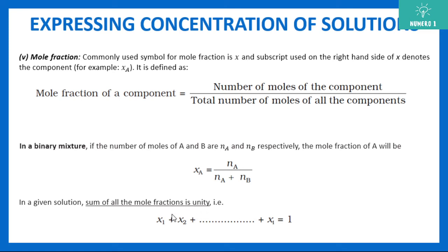For i components, x_1 + x_2 + x_3 + ... + x_i = 1. In the binary solution example, x_A = n_A / (n_A + n_B) and x_B = n_B / (n_A + n_B). Adding x_A + x_B will obviously give the value 1.